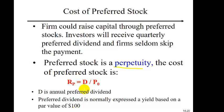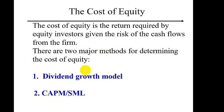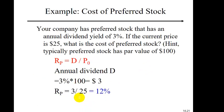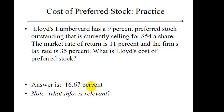Quiz: what is the par value of preferred stock — $100 or $1,000? Let's practice. Your company has preferred stock with an annual dividend yield of 3%. If the current price is $25, what is the cost of preferred stock? We find the annual dividend amount as 3% × $100 par value = $3. Then dividing by the stock price of $25, the cost of preferred stock is 12%. Ready to practice on your own? Pause the video and calculate.